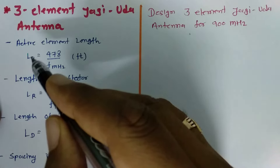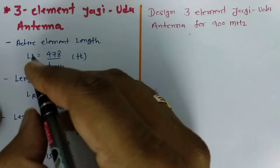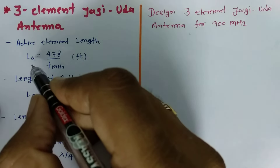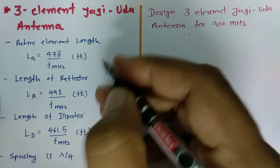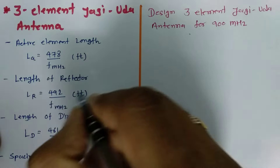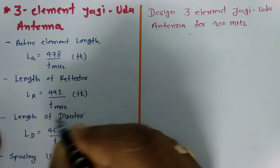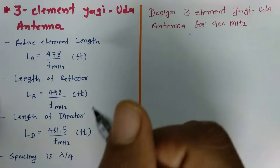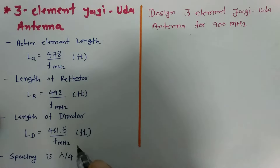The active element is the driven element, and we need to calculate that first. The active element length is 478 divided by frequency in MHz, and that calculation will be in terms of feet. The reflector element length is 492 divided by frequency in MHz, also in feet. The length of the director is 461.5 divided by frequency in MHz, also in feet.